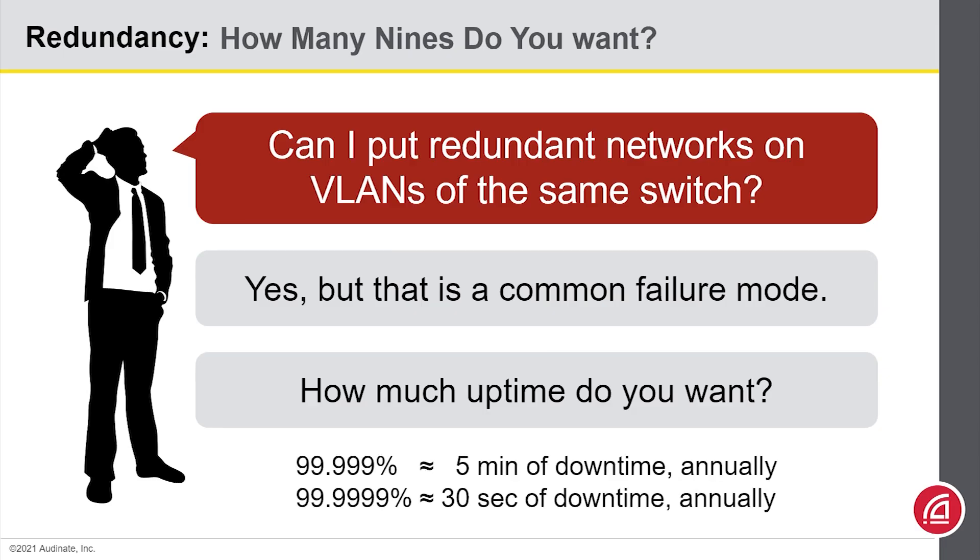Now, typically, the target is somewhere around five or six nines of uptime. And just to put that in perspective, five nines of uptime means you have about five minutes of downtime annually.